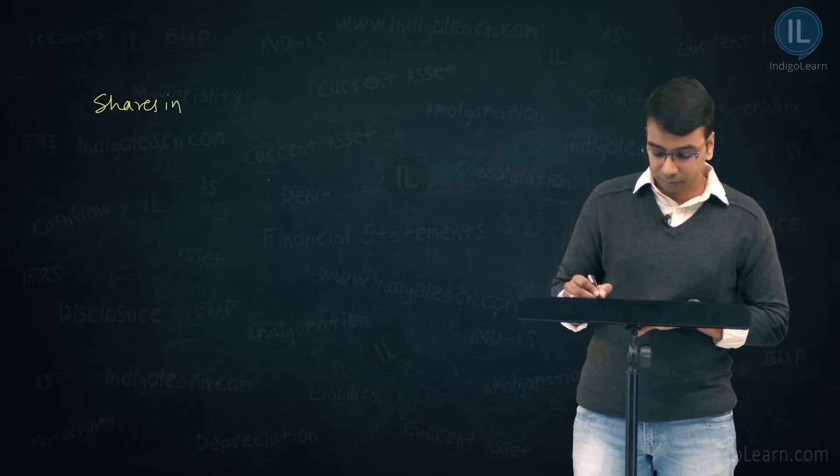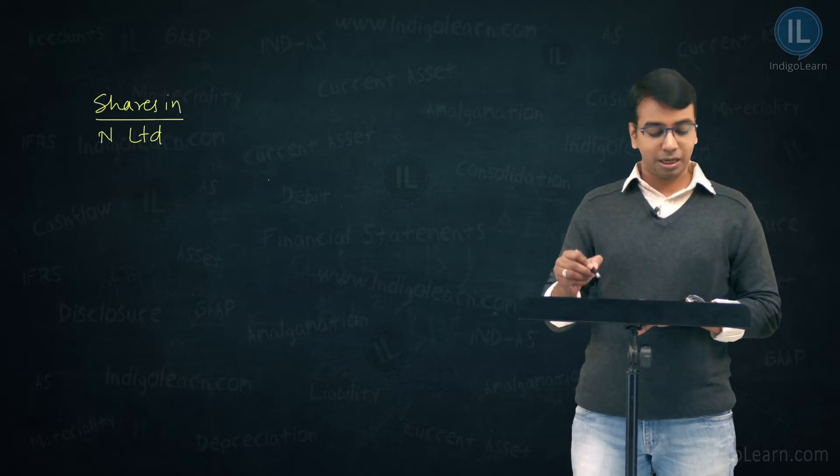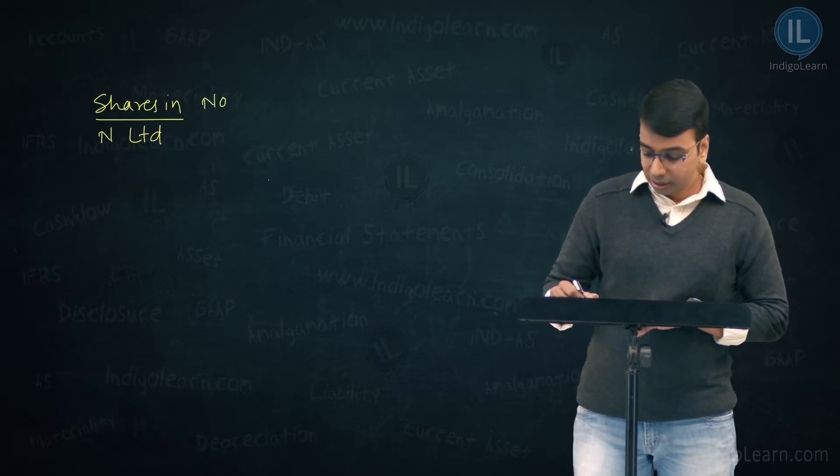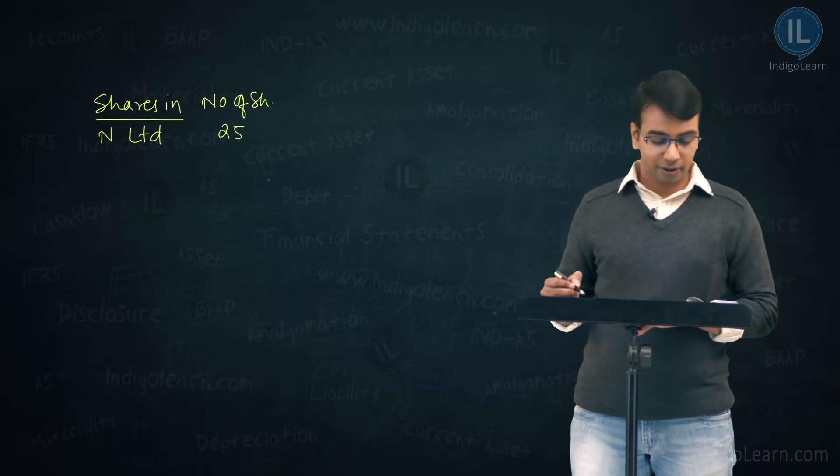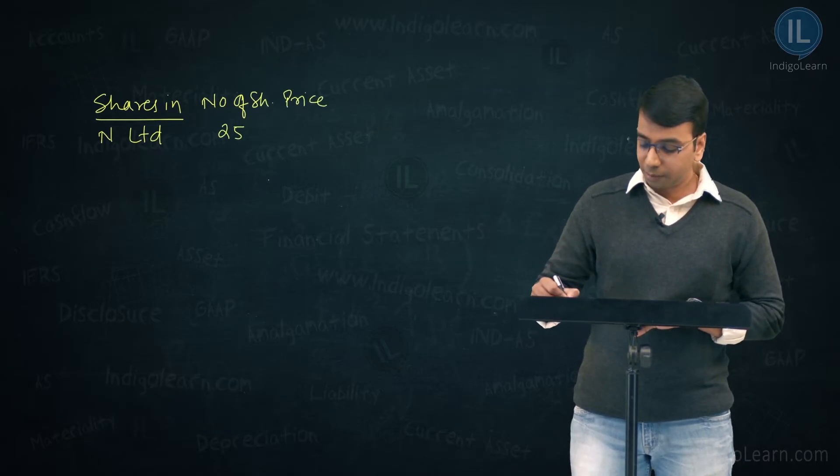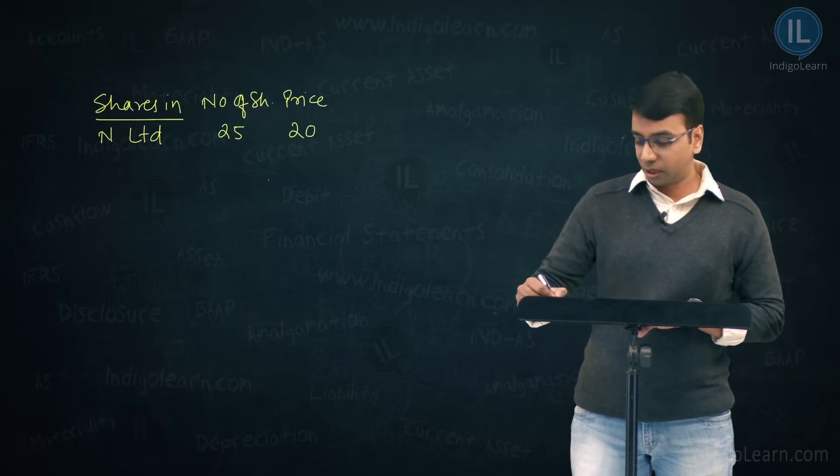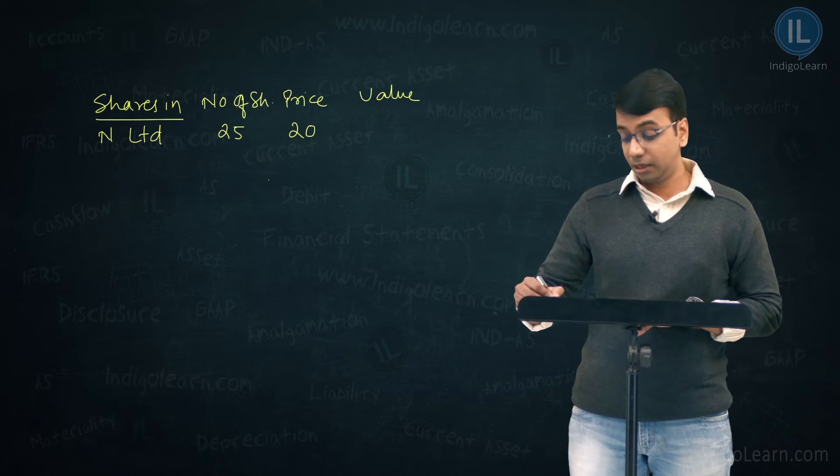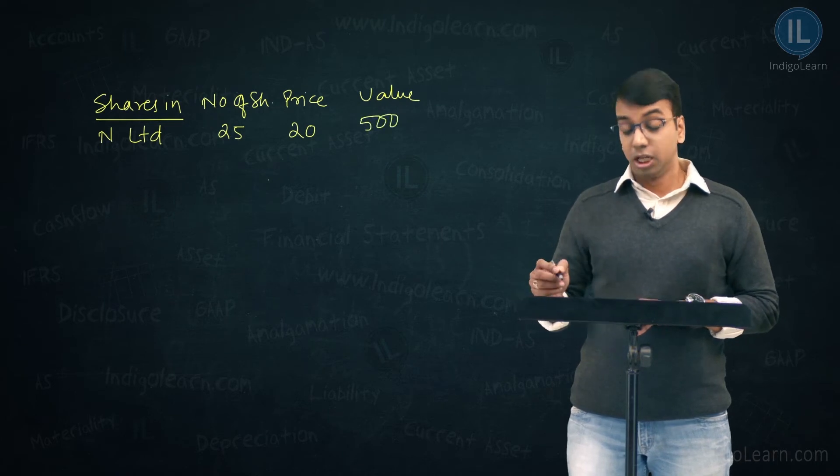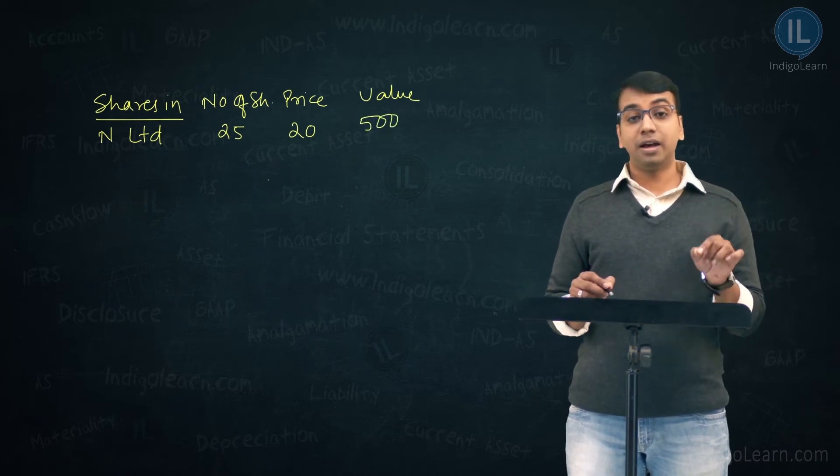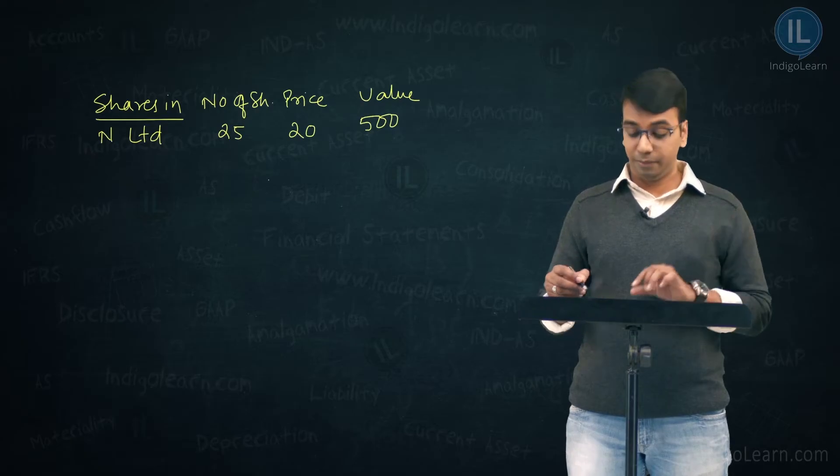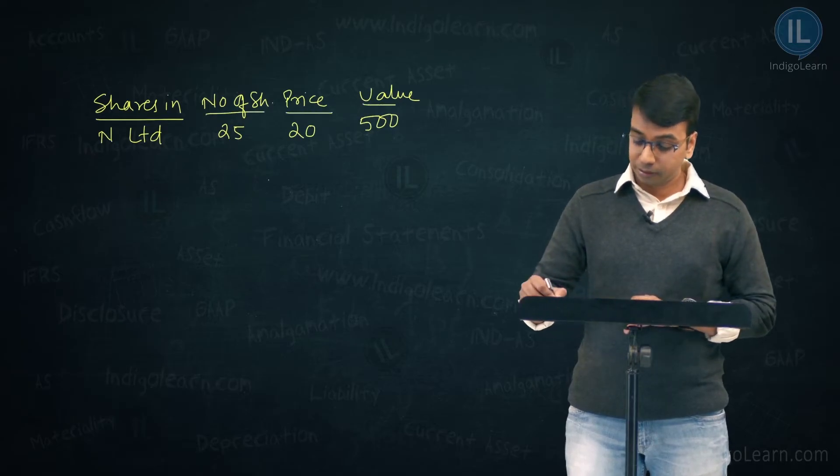Which is the first company? Shares in N limited. What are the number of shares? Number of shares are 25. What is the price? Market price is 20. What is the value? Simple, 25 into 20 the value is ₹500. So ₹500 is the market value of shares in N limited.